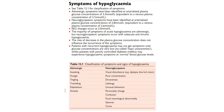Looking at symptoms of hypoglycemia from the Oxford Handbook, they can be divided into two types: adrenergic — which are sweating, hunger, tingling, palpitations, trembling, and anxiety — or neuroglycopenic, which include visual disturbances like diplopia, blurred vision, poor concentration, drowsiness, lethargy, unusual behavior, personality change, confusion, seizures, coma, and focal neurological abnormality. Several of these neuroglycopenic symptoms were actually occurring in this patient.